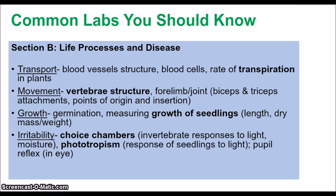For irritability, the choice chamber experiment is common — investigating how invertebrates like woodlice respond to light and moisture, observing how organisms move depending on which area is darker or has more moisture. For phototropism, know the response of seedlings to light and how auxin controls shoot growth toward the light. Also know the pupil reflex: in bright light pupils constrict; in dim light they dilate, due to the behavior of the iris muscles.